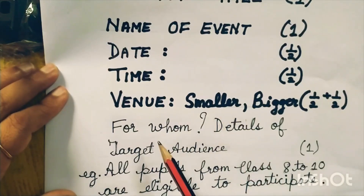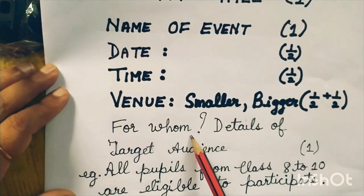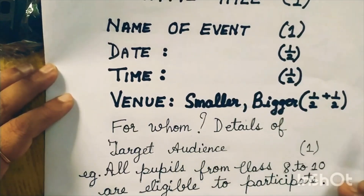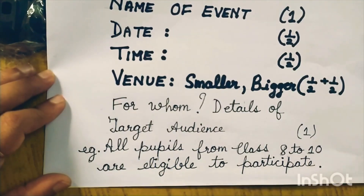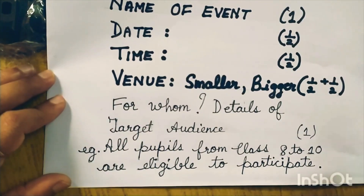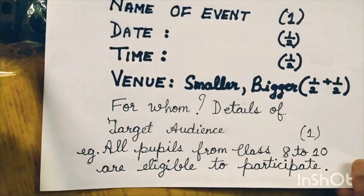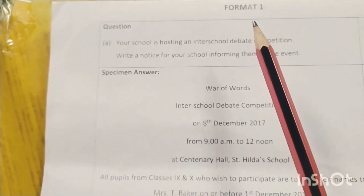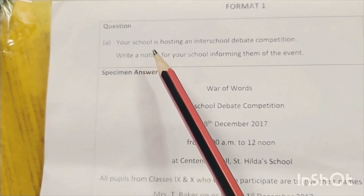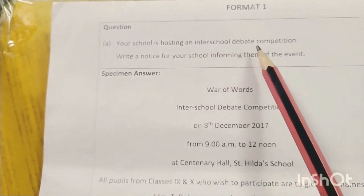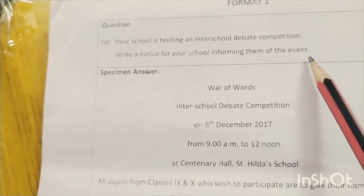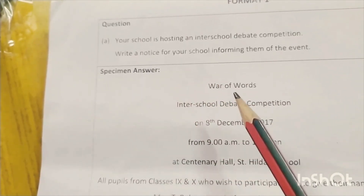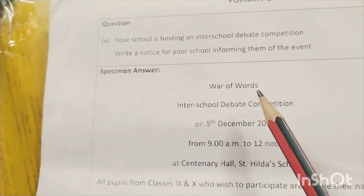Next, give details of for whom the competition is — the target audience — which carries one mark. For example, all pupils from classes 8th to 10th are eligible to participate. So this is the basic format of notice writing. You do not have to make a box outside it. This is the first format given by the ICSE board. For example, the question is: your school is hosting an inter-school debate competition — write a notice informing students of the event. The specimen answer begins with the creative title 'War of Words,' which carries one mark.